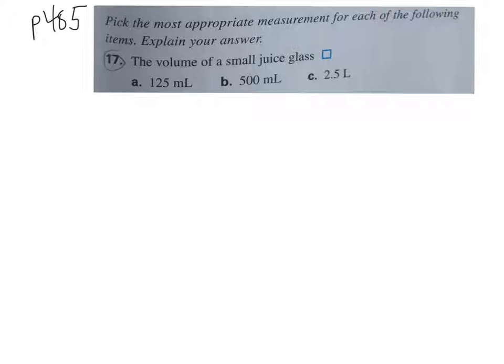The ones in the homework are a little bit more obvious. Keep in mind, sometimes it'll say pick the most appropriate metric measurement — if they give you something like pounds, pounds aren't metric, so automatically it's not that one. On number 17, they're only giving us metric choices. We have a small juice glass. 2.5 liters is obviously wrong because think about a 2-liter of soda — it's pretty big, and this is even bigger than that. So we're down to milliliters: 125 milliliters or 500 milliliters.